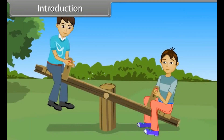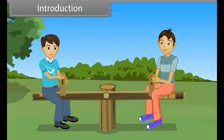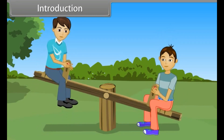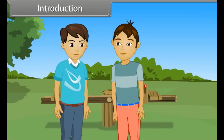When they both sat on the seesaw, it was not balanced. Then Roy pushes himself forward on the seat. Now the seesaw is balanced and they enjoy the ride. After the ride, Ajit asked Roy how he was able to balance the seesaw. Roy replied that the seesaw works on the principle of torque.